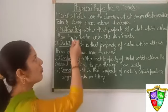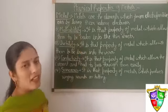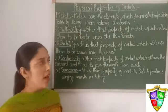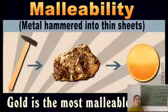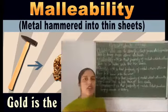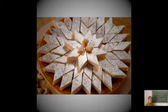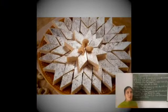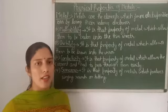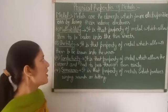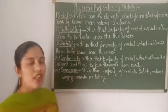The first property is malleability. It is that property of metal which allows them to be beaten into thin sheets. Metals can be beaten to make thin sheets — we make silver foil from silver metal, which is used to decorate sweets. Similarly, aluminium foil is made by beating aluminium metal, which we use to pack food items.